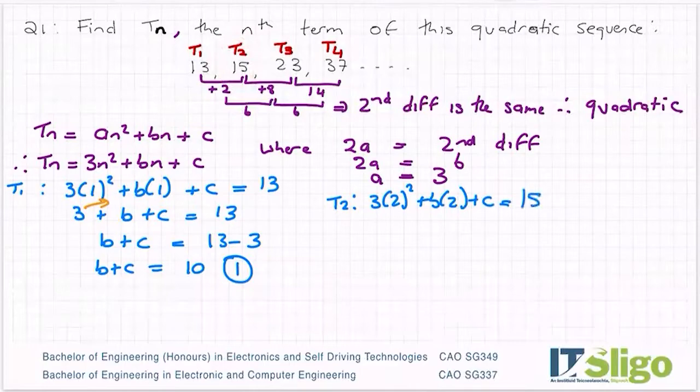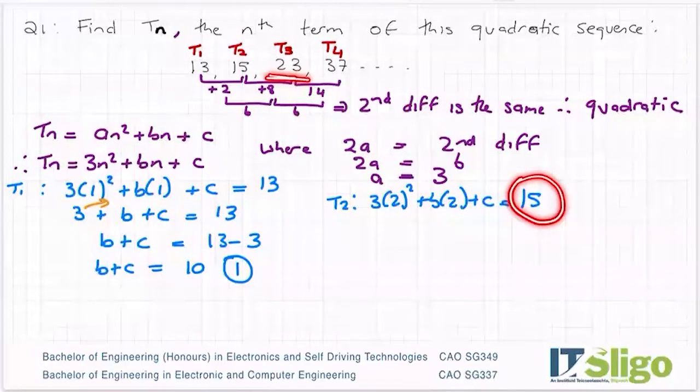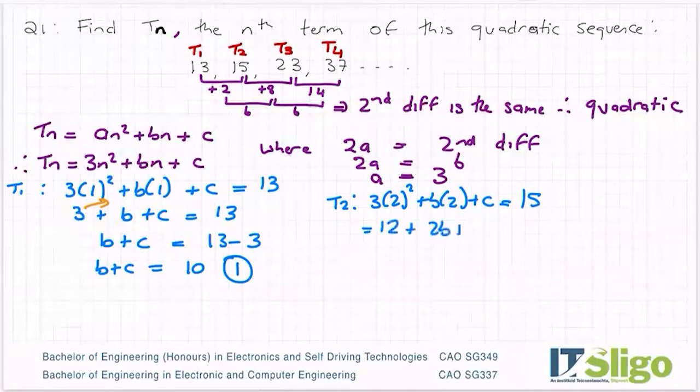Like I said, you can take any term. I could have taken T3 here and just replaced n with three, I'd just have to let it equal to 23, which is what T3 was. But it doesn't matter. It's just to keep the numbers small. We generally take the lowest terms we can. So three times two squared - two squared I have to work out first is four times three is 12 plus 2b plus c is equal to 15. Or 2b plus c is equal to 15 minus 12, which is equal to 3. So that's my second simultaneous equation.